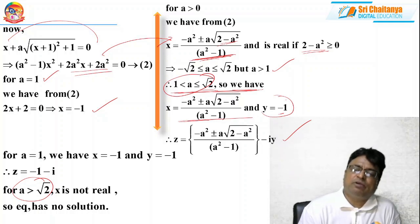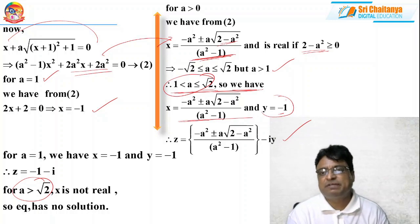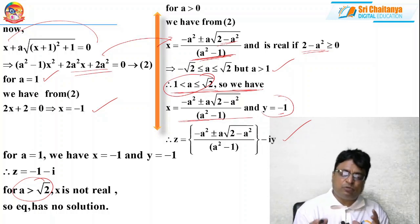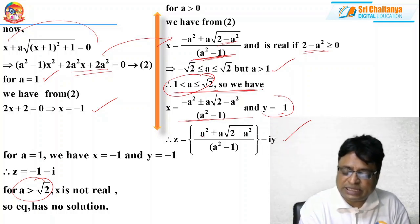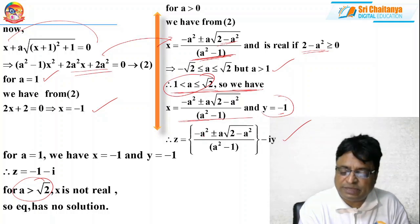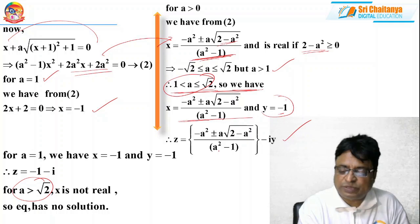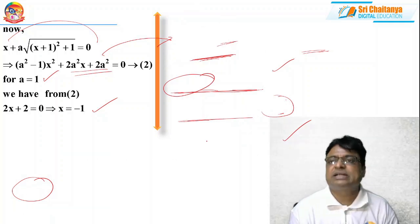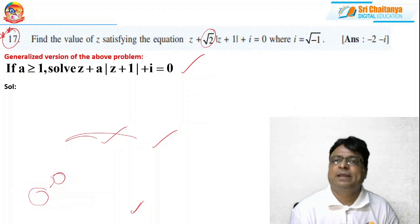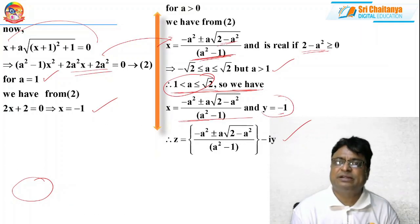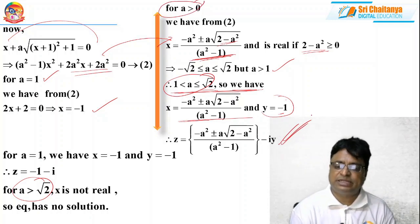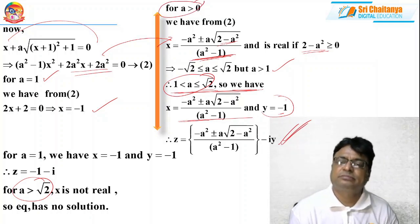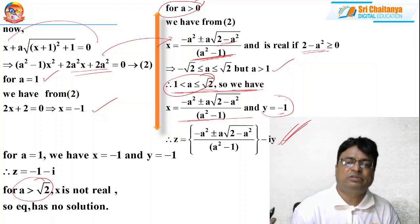For a = √2, substituting into the formula: x = (−(√2)² ± √2·√(2−2)) / ((√2)²−1) = (−2 ± 0) / 1 = −2. And y = −1. So z = −2 − i. Here the ± term vanishes since 2 − a² = 0 when a = √2. This is the more generalized version. For a > √2, if they have given root 5 or something, immediately you can say the equation has no solution.